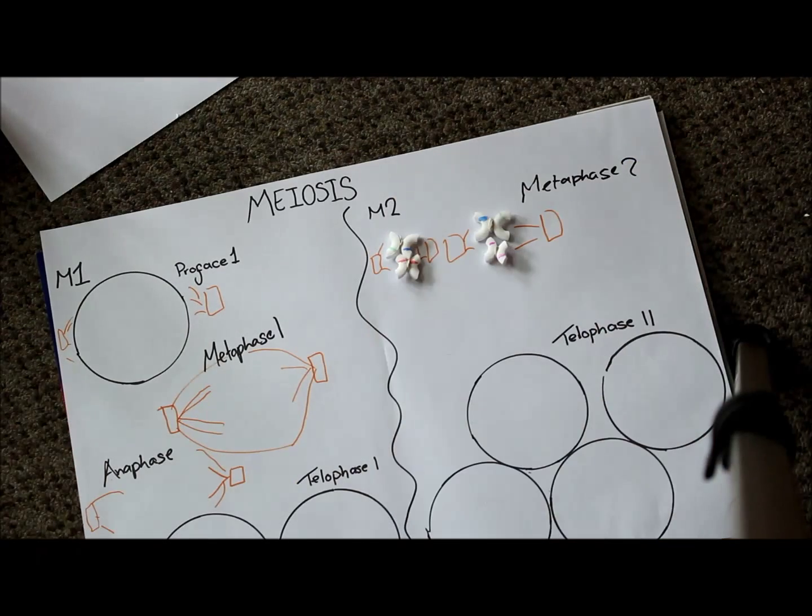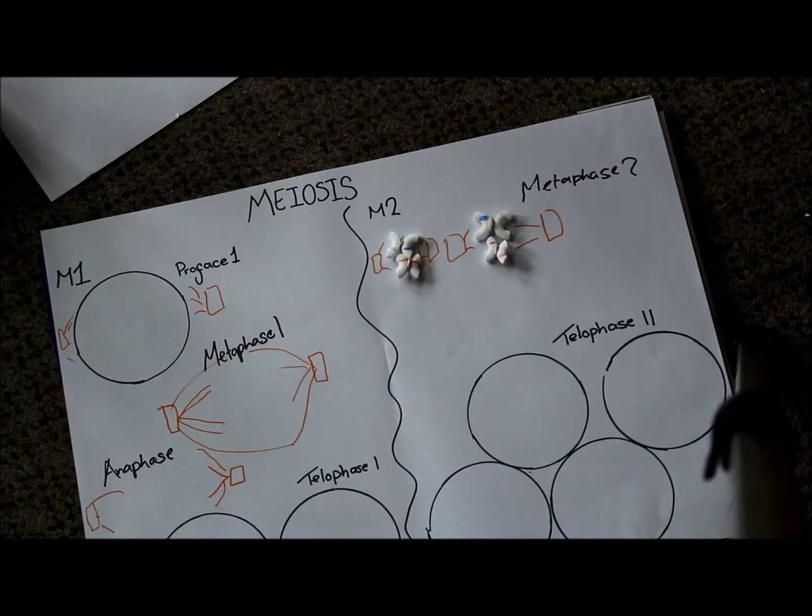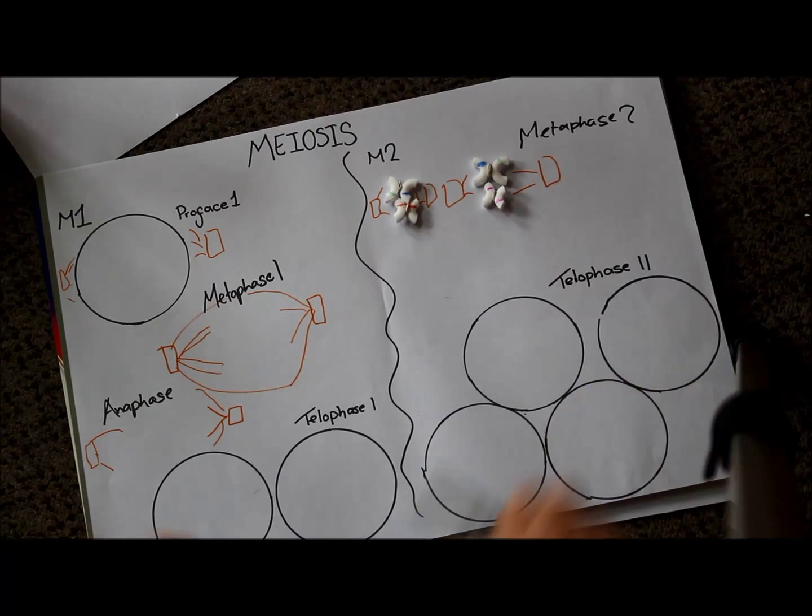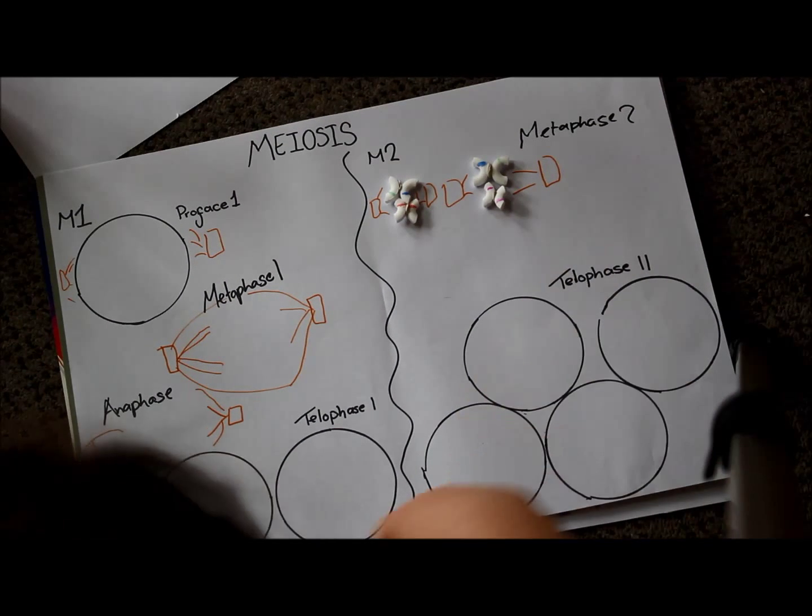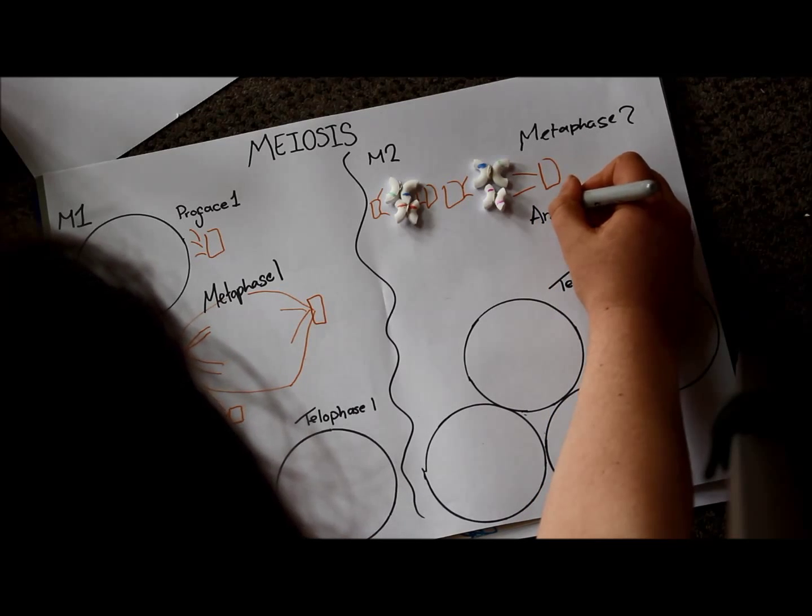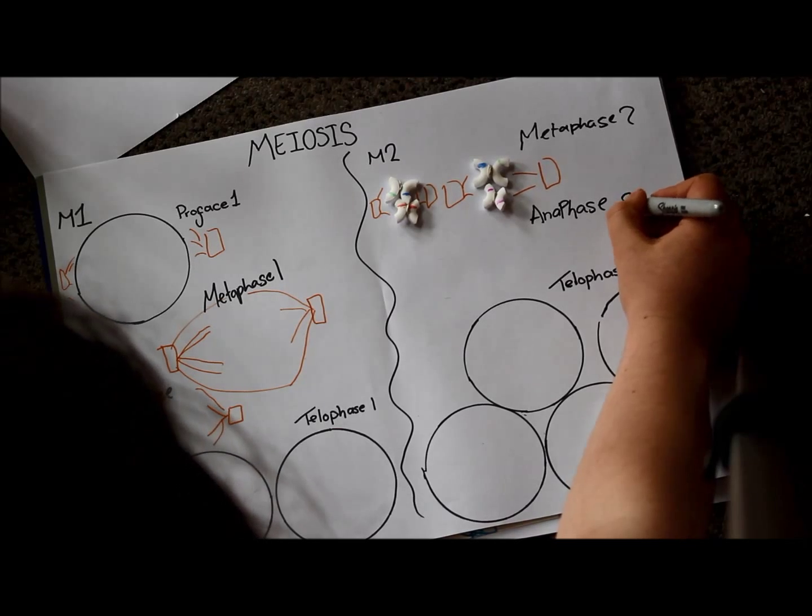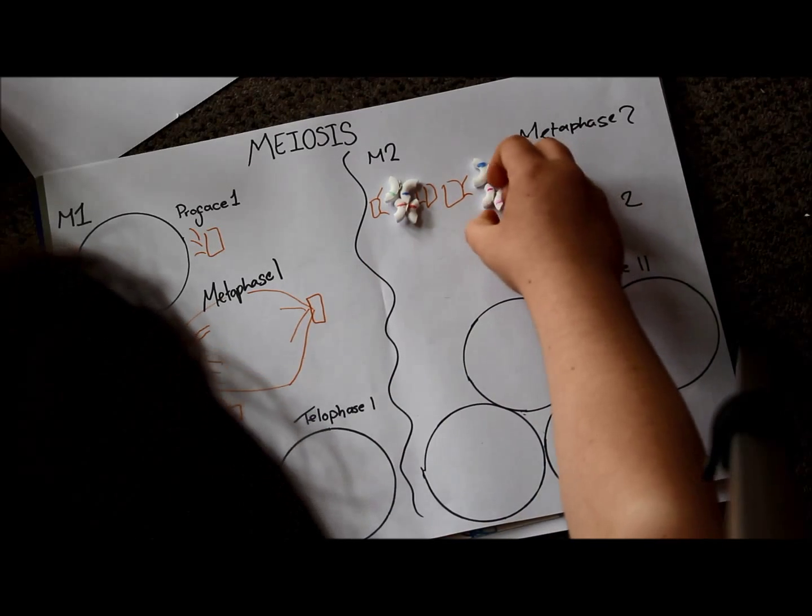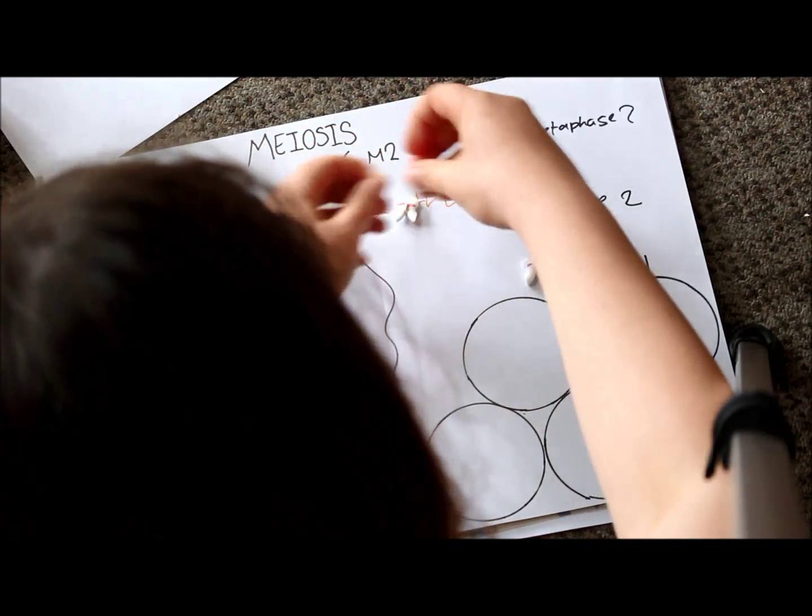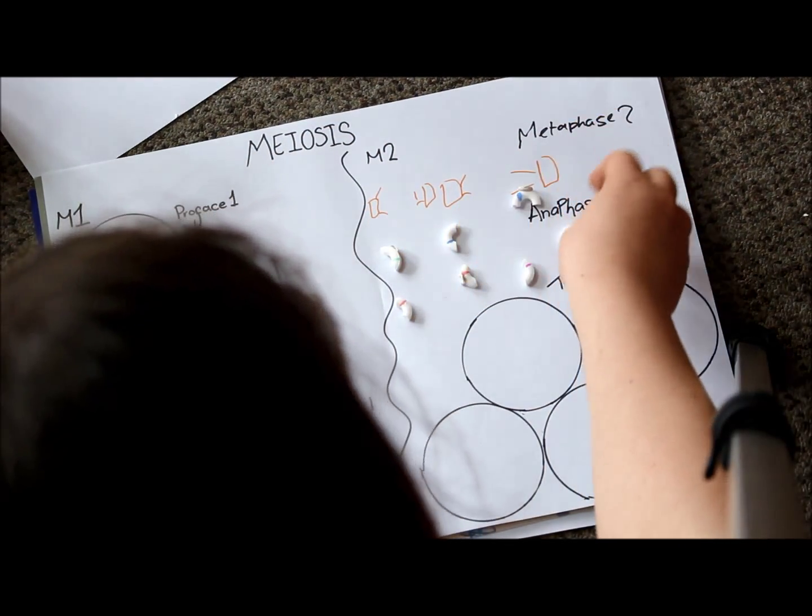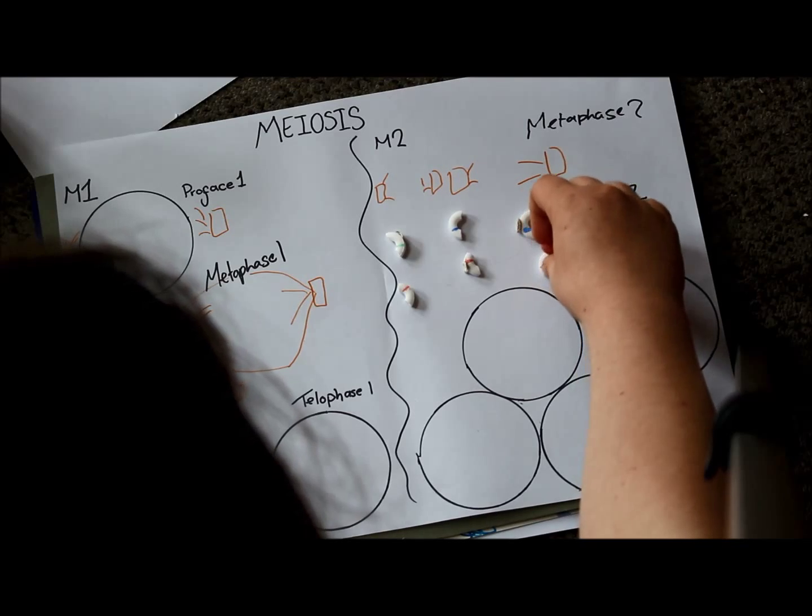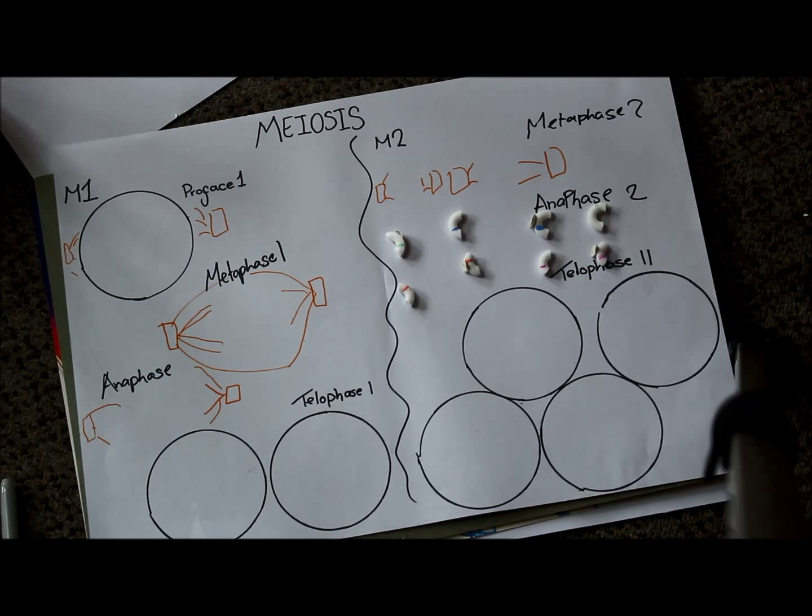Metaphase two, which moves straight into anaphase two, which you will just recognise directly from mitosis. And in each cell, these are pulled apart. Like so. And they're pulled apart by the spindles retracting to the opposite poles of the cell.